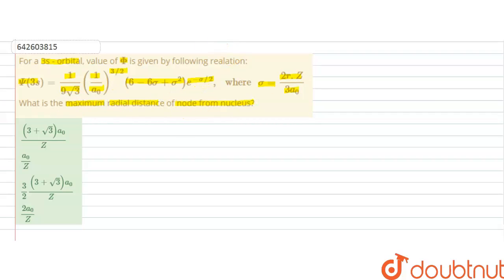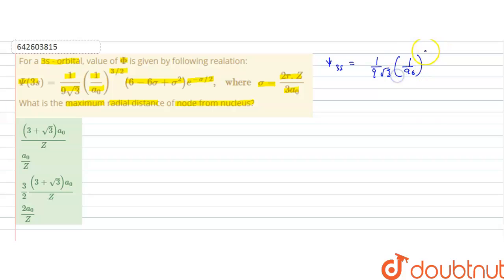In this question, we have been given the wave function of the 3s orbital, that is psi 3s = 1/(9√3) × (1/a₀)^(3/2) × (6 − 6σ + σ²).